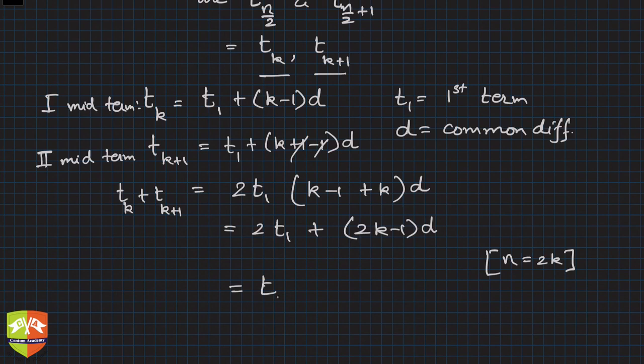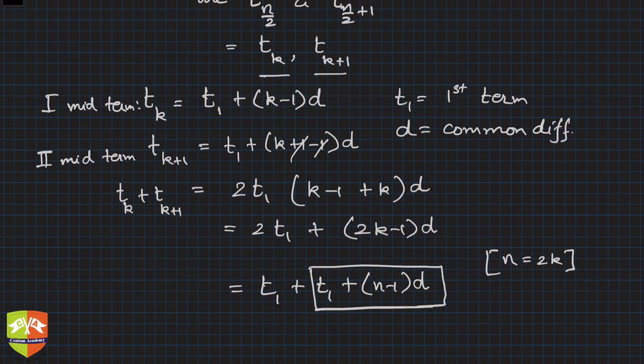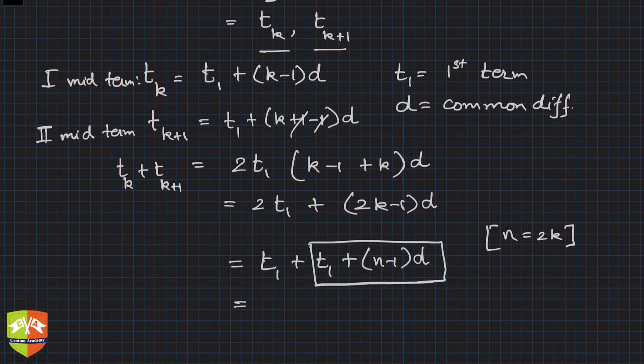So hence, this is: separate the t_1 also, so t_1 + [t_1 + (n-1)d]. 2t_1 was separated as t_1 and t_1, and this one... now focus on this term.